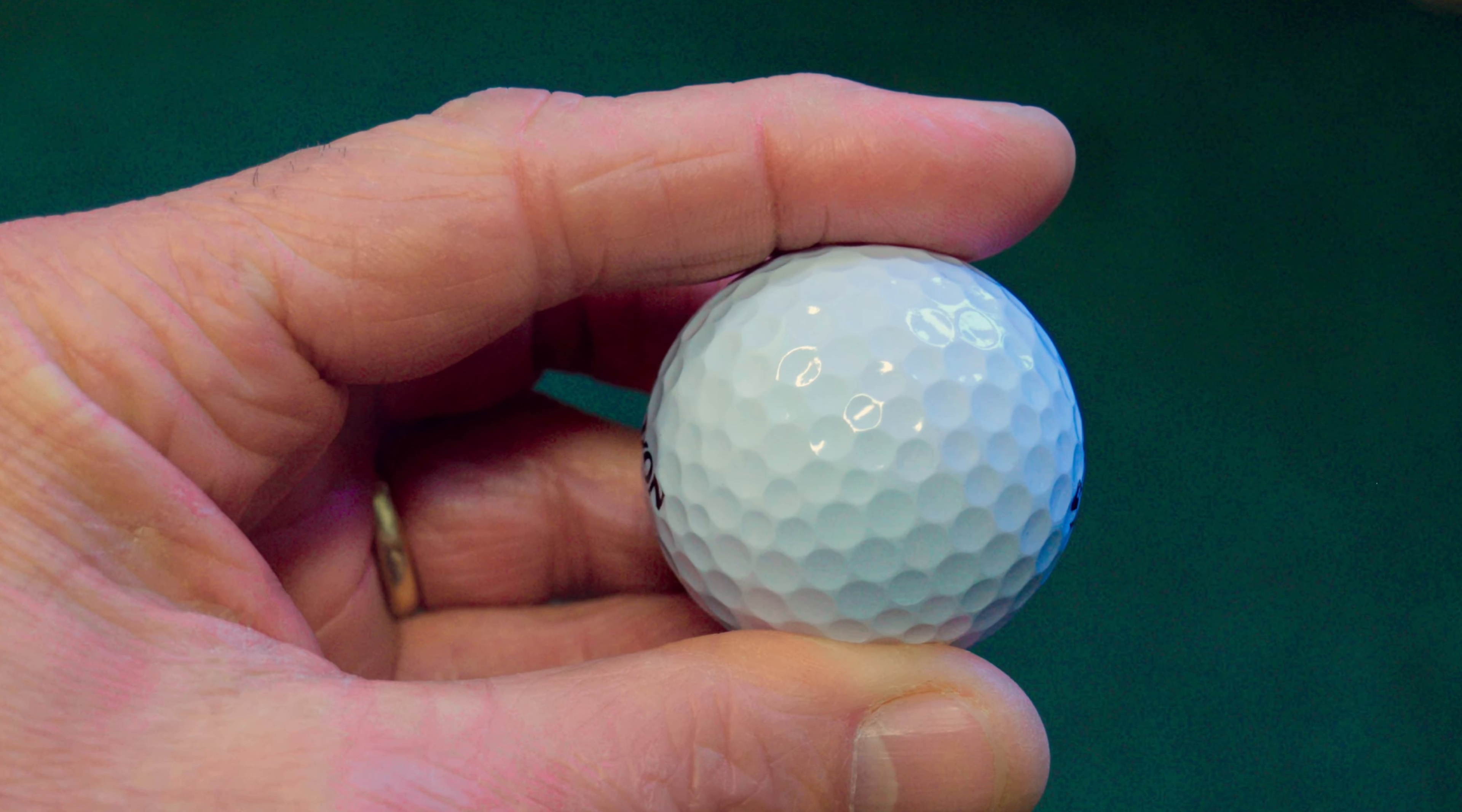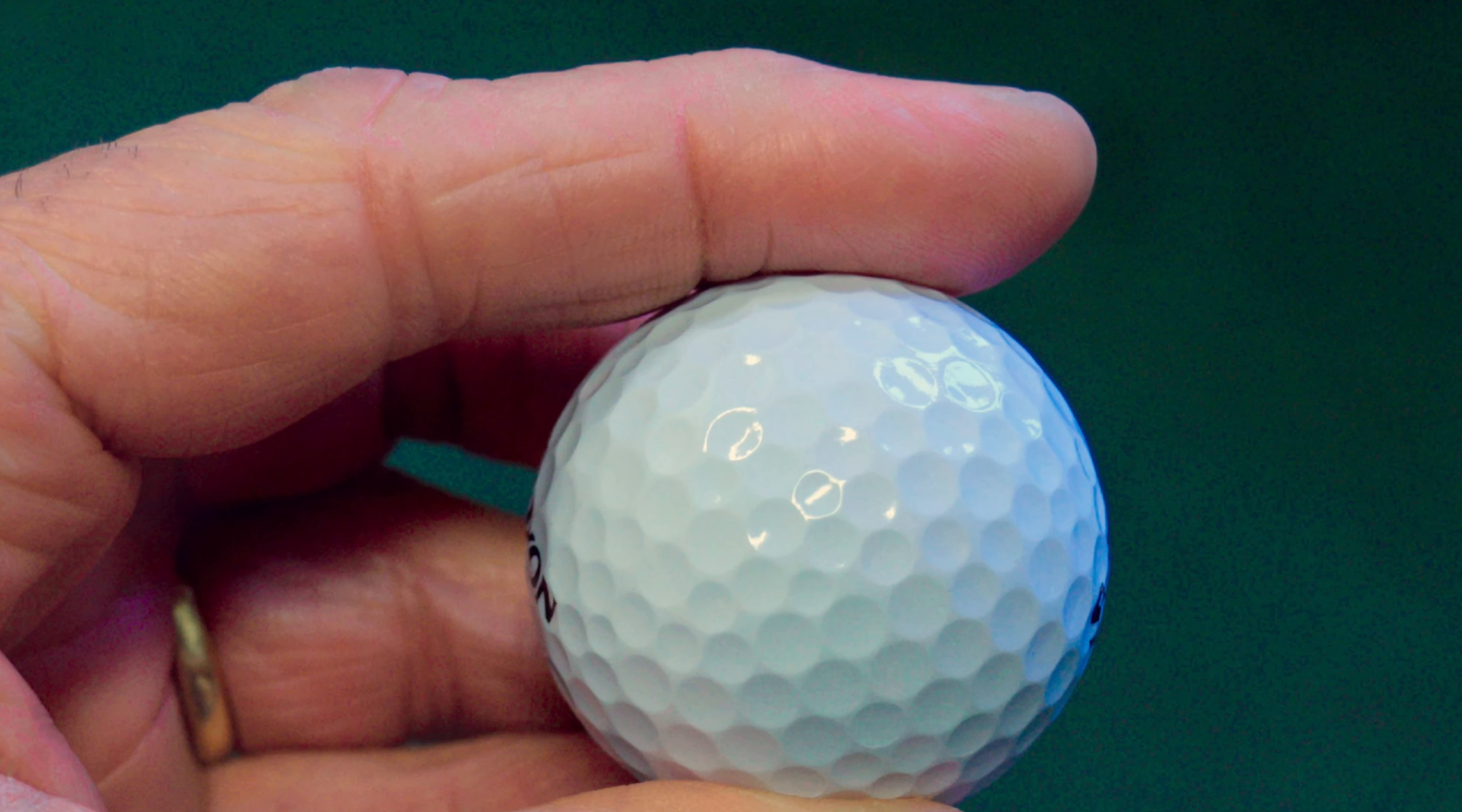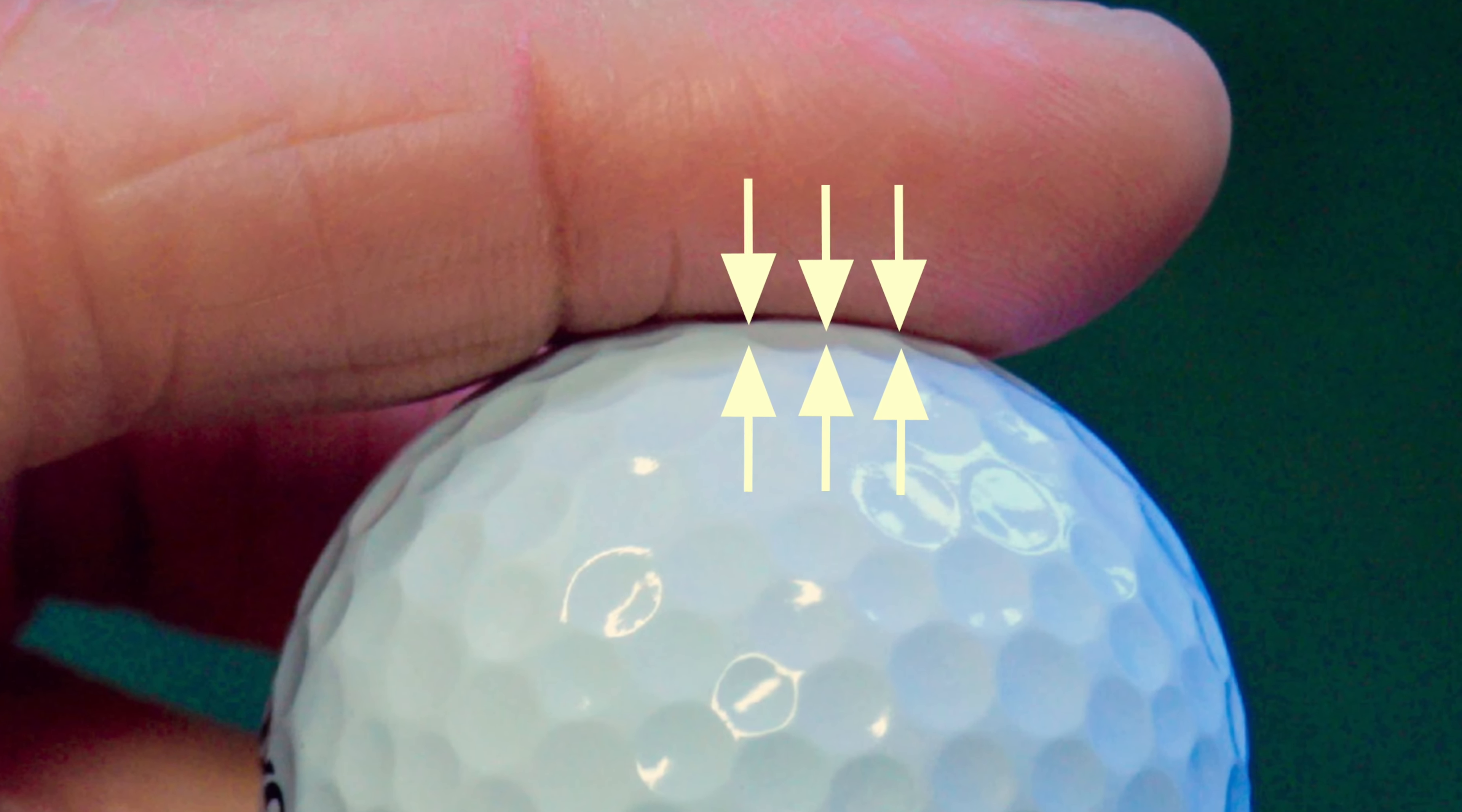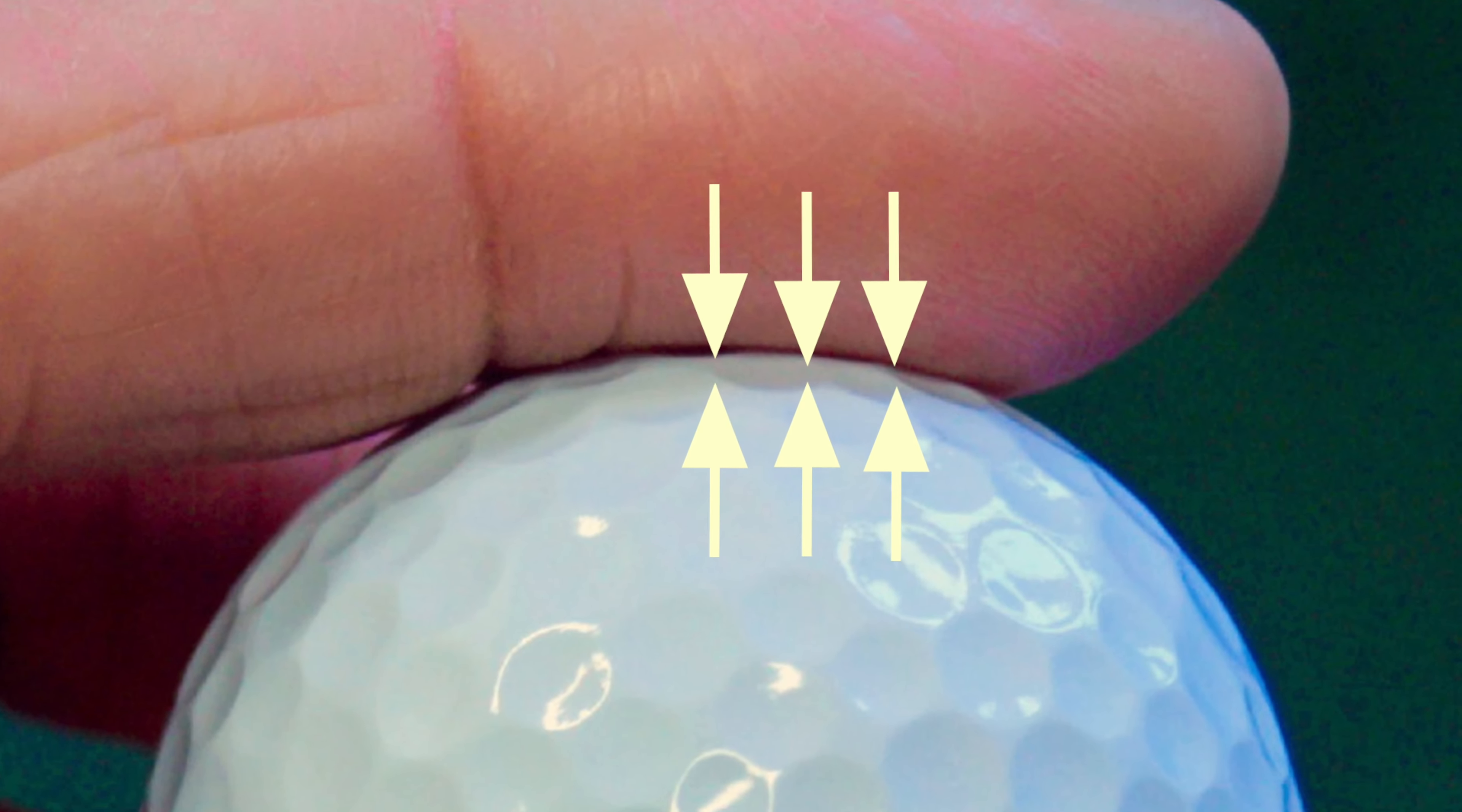When you touch a golf ball, it's hard. But on the microscopic level, it is soft. Touching it is really the energy bundles of your finger interacting with those of the golf ball.